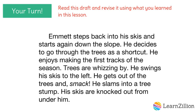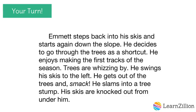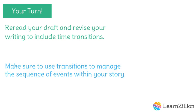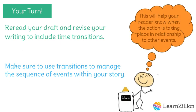Now it's your turn. Read this draft and revise it using what you've learned in this lesson. Pause the video. When you have finished following the instructions, press play again. Re-read your draft and revise your writing to include time transitions. Now you know to make sure to use transitions to manage the sequence of events within your story. This will help your reader know when the action is taking place in relationship to other events.